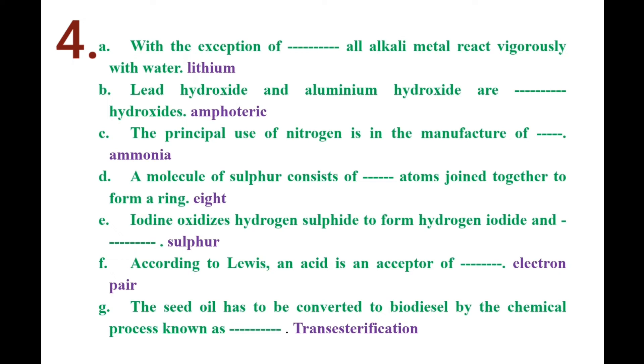Number B. Lead hydroxide and aluminum hydroxide are amphoteric hydroxides.